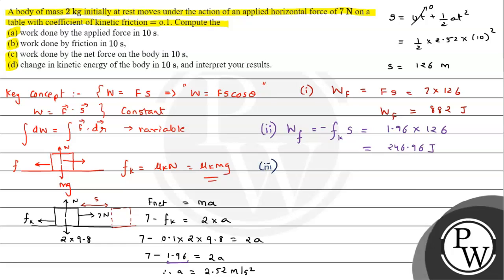For Part C, we calculate work done by the net force on the body in 10 seconds. The net force = 7 - 1.96 = 5.04 N. Therefore, W_net = F_net × s = 5.04 × 126, and the final result comes out to be 635.04 joules. We can verify this by subtracting: 882 - 246.96 = 635.04 joules.